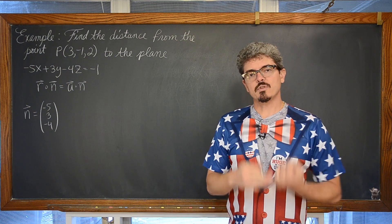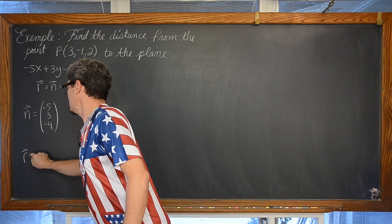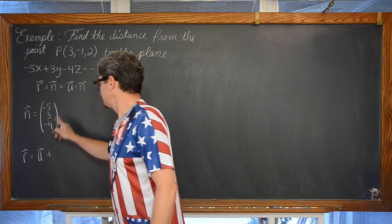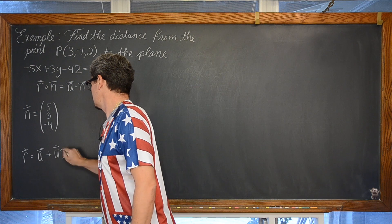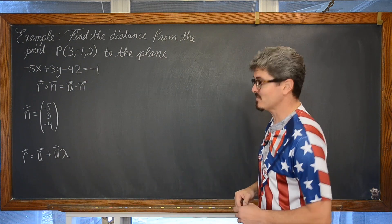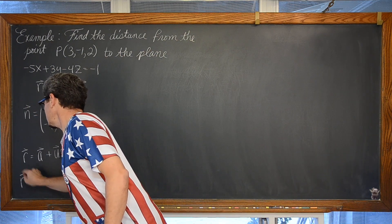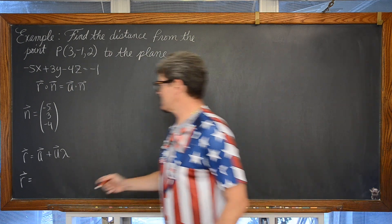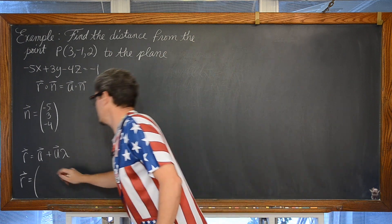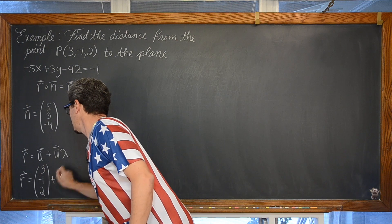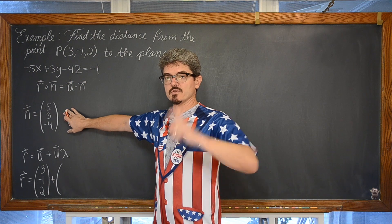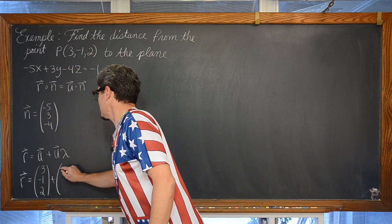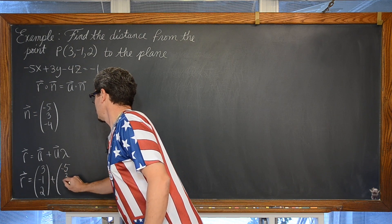The vector form for the equation of a line is vector r equals a known point on the line plus some direction vector u times scalar lambda — I am using lambda because we are talking about lines. So the equation of our line going through the given point perpendicular to the plane is: position vector (3, -1, 2) plus lambda times the normal vector direction (negative 5, 3, negative 4). That perpendicular direction is exactly the slope we want for measuring the shortest distance.